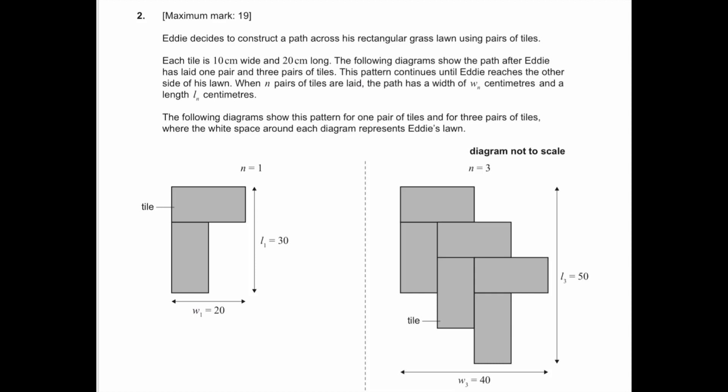Question number two. Eddie decides to construct a path across his rectangular grass lawn using pairs of tiles. Each tile is 10 centimeters wide and 20 centimeters long. The following diagrams show the path after Eddie has laid one pair and three pairs of tiles.